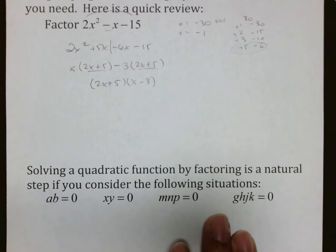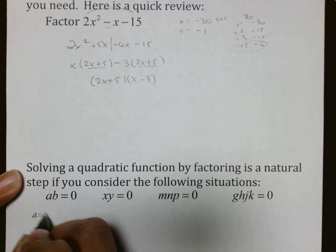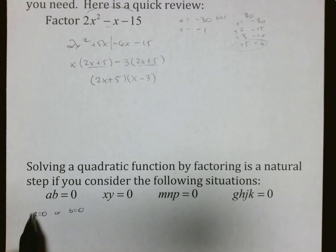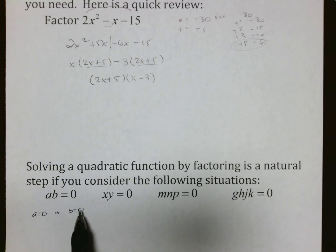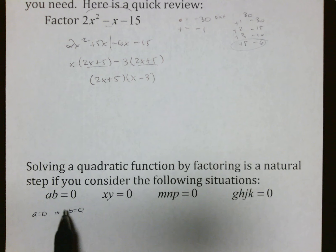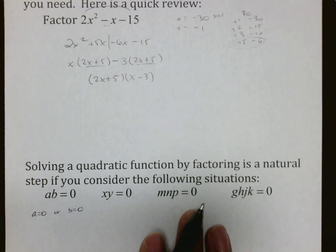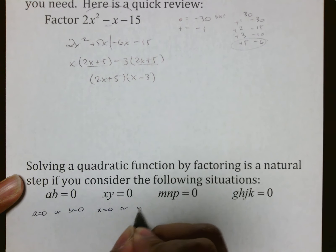Solving a quadratic function by factoring is a natural step of evolution if you consider the following situation. If A times B equals 0, one of two things has to be true: either A equals 0 or B equals 0. Because if A equals 0, it doesn't matter what B is — 0 times anything is 0. Same thing if X times Y equals 0, that means X equals 0 or Y equals 0.